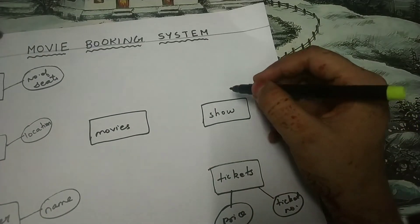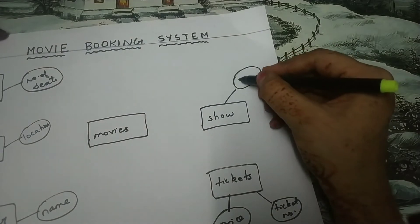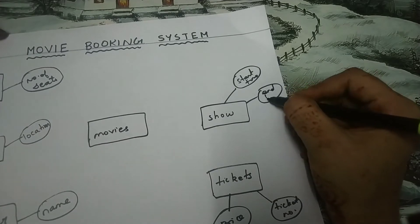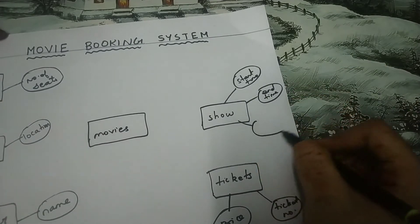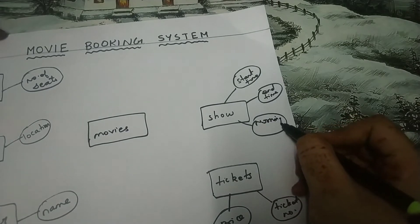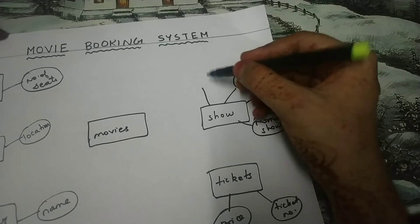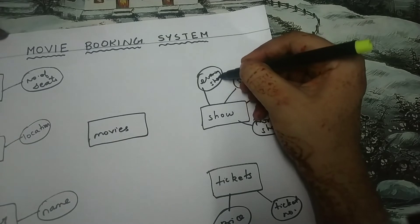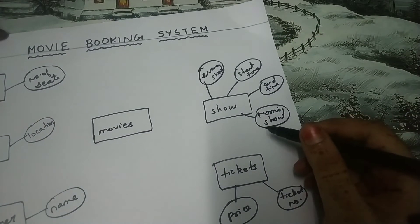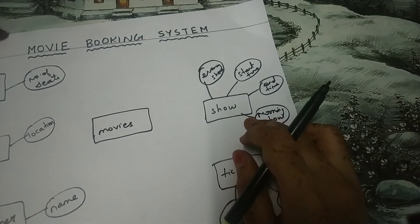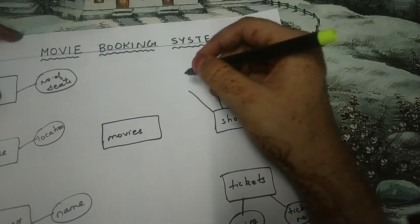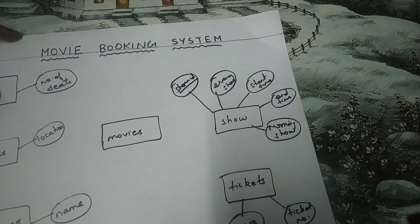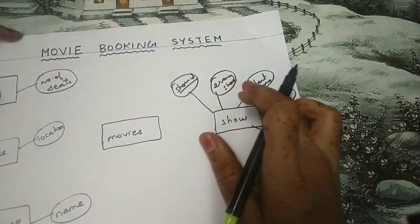The attributes of show are: start time, end time, morning show, and evening show. Show will also have an ID which is unique, so it must be underlined — it is a primary key. Every show will have a unique ID.